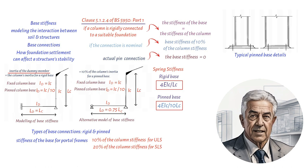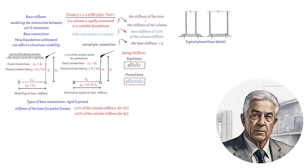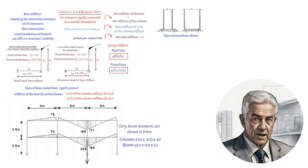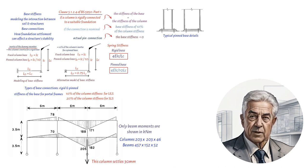Settlement of isolated foundations can have a dramatic effect on the bending moments of the frame. A typical bending moment diagram is shown as a result of the third foundation being vertically displaced by 30 mm relative to the remainder.